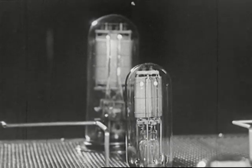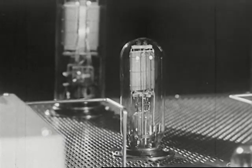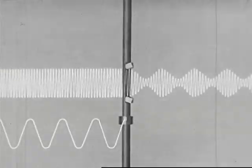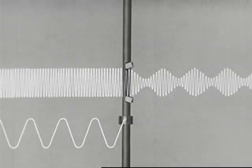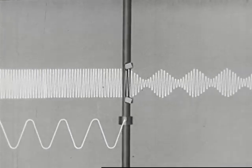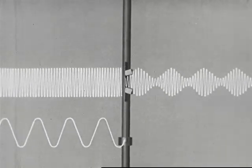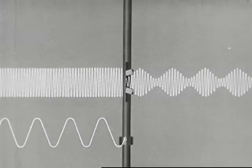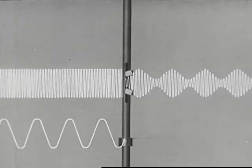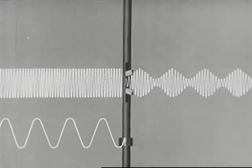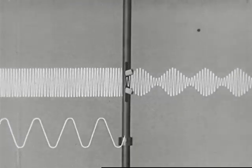This is the modulator tube in which the radio frequency current is modulated by the audio frequency current. The audio frequency current shown at the lower left modifies the radio frequency current shown above according to the strength and the frequency of the voice current. This is called modulation. Note however that the modulated wave is still a radio frequency current.